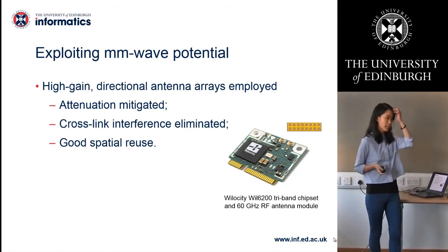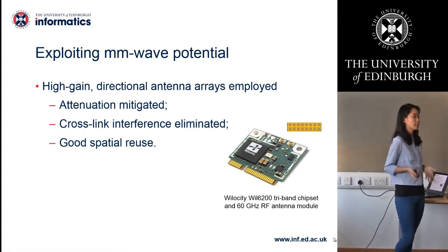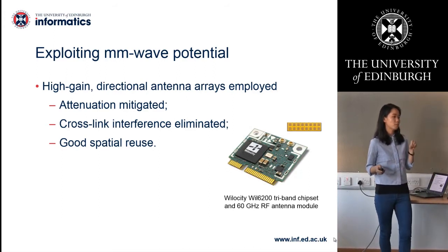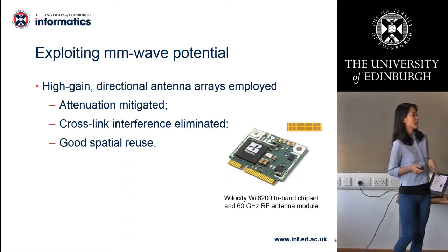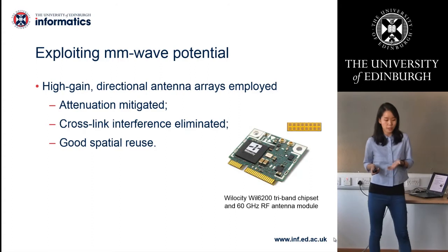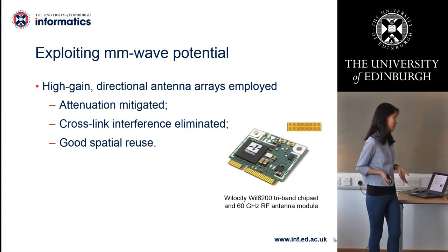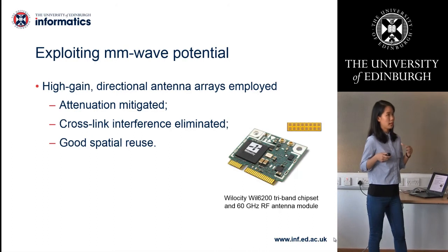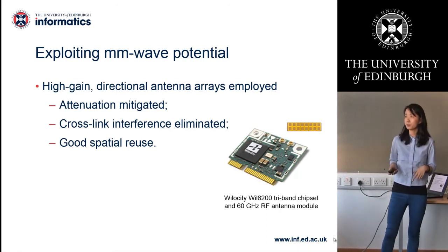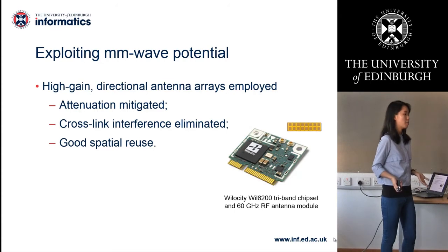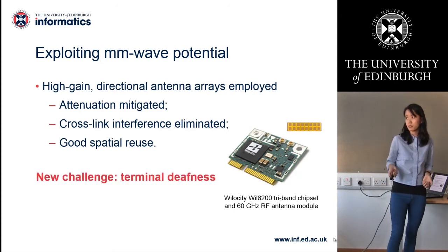With beamforming technology, signal attenuation is greatly tackled. Also, with this directional fashion of transmission, the interference experienced by traditional frequencies and broadcasting-type channels is greatly mitigated. Previous research has shown that transmissions using highly directional antennas can be assumed as pseudo-wired, like direct link transmissions. This also allows for good spatial reuse, meaning non-interfering links can be active at the same time, which will increase network efficiency as well.